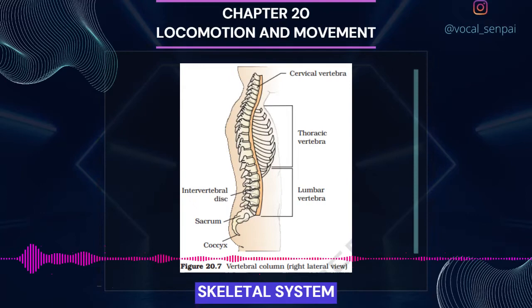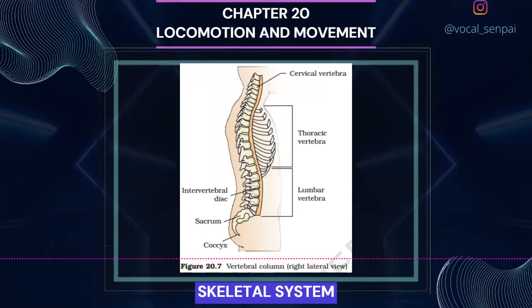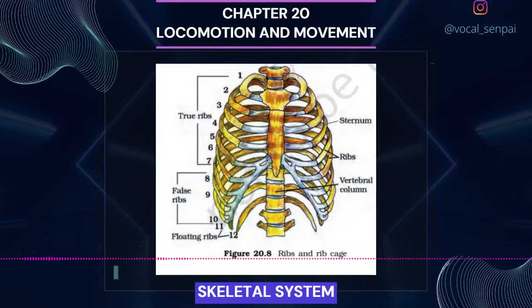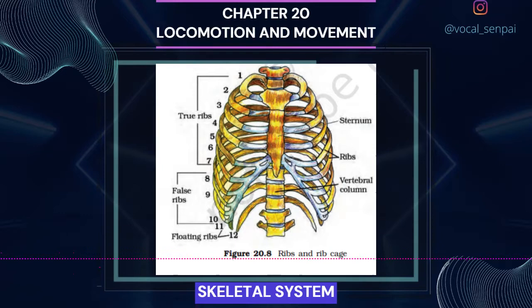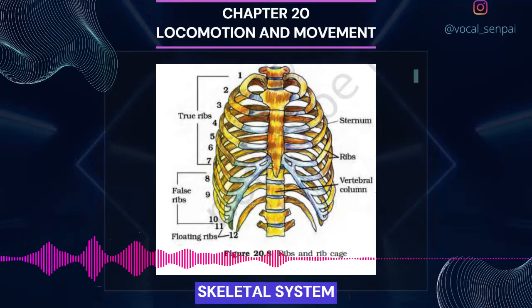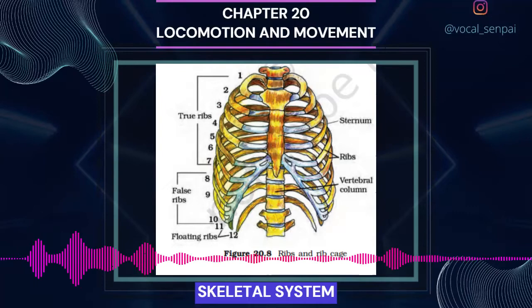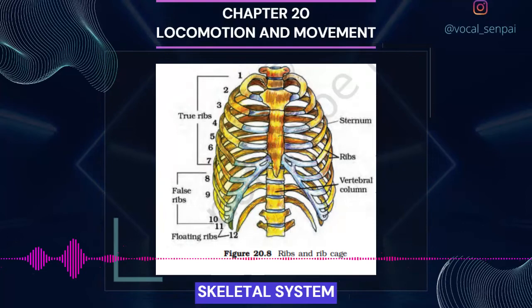Each vertebra has a central hollow portion, the neural canal, through which the spinal cord passes. The first vertebra is the atlas and it articulates with the occipital condyles. The vertebral column is differentiated into cervical (7), thoracic (12), lumbar (5), sacral (1, fused) and coccygeal (1, fused) regions starting from the skull. The number of cervical vertebrae is 7 in almost all mammals including human beings. The vertebral column protects the spinal cord, supports the head and serves as the point of attachment for the ribs and musculature of the back. Sternum is a flat bone on the ventral midline of thorax.